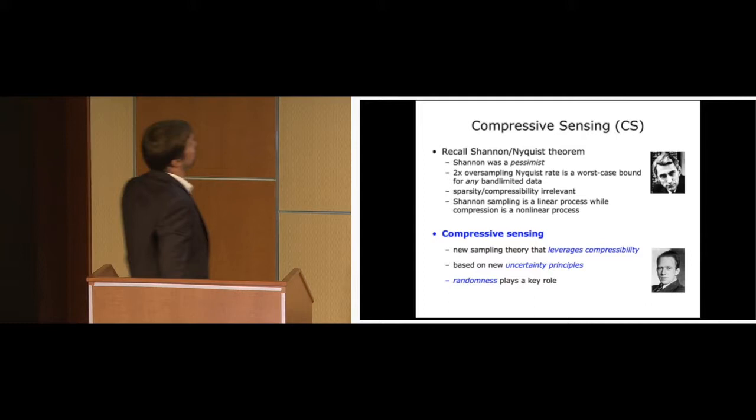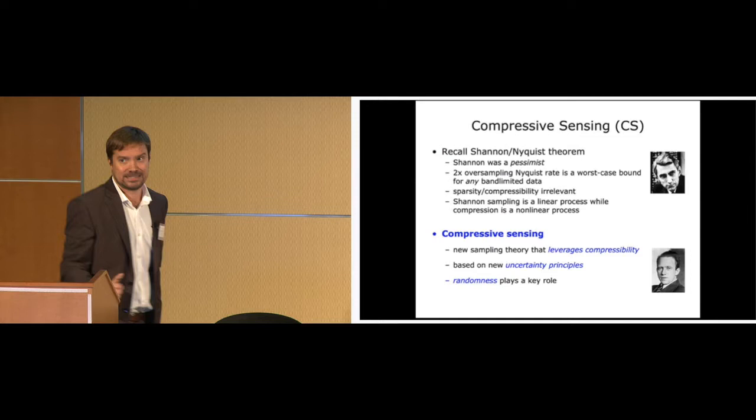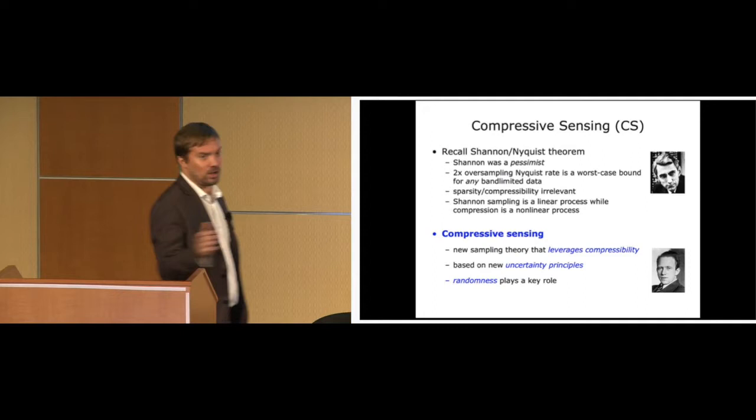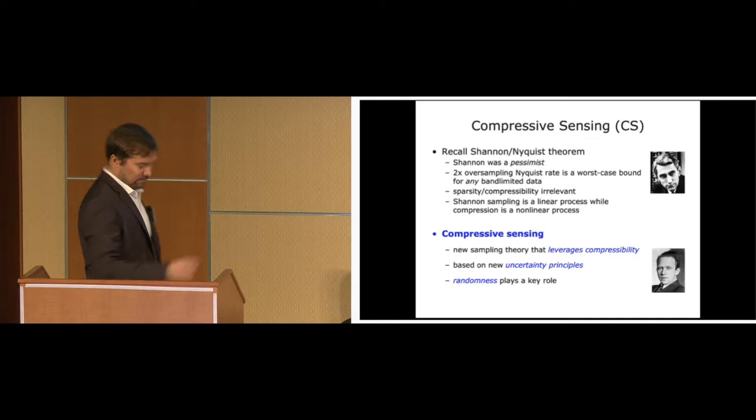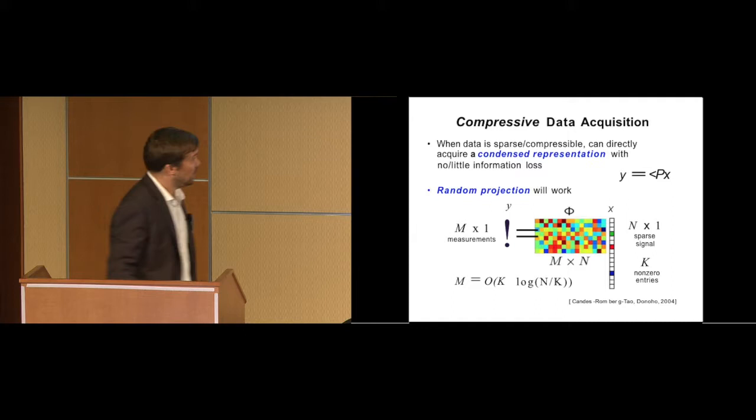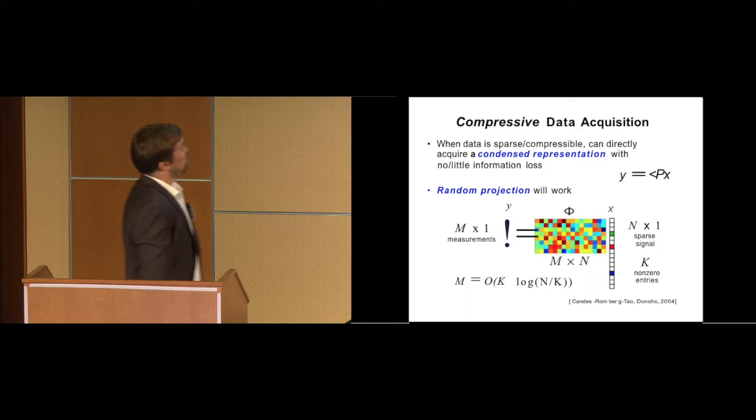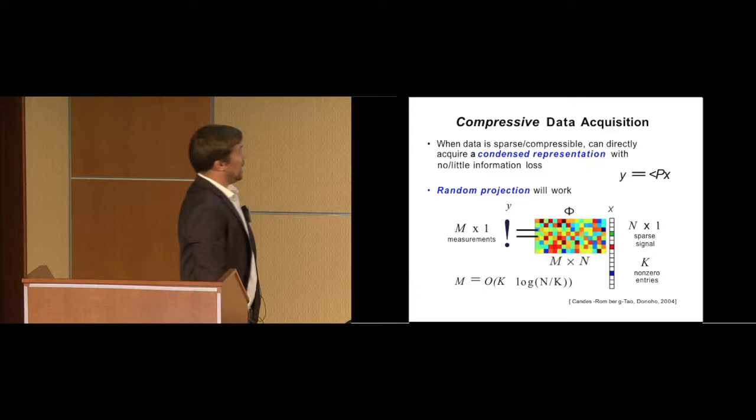And so this is compressive sensing. Shannon Nyquist's theorem says you find the highest frequency signal and you'll double that and then you'll be sure not to miss anything. Well, this is a worst case scenario. Real signals that we might encounter in the lab or the natural world aren't really this bad. And a lot of signals, especially what we encounter in neuroscience, they're sparse. That most of the signal will be zero or it's sparse in some domain. And so this leverages some new uncertainty principles and randomness plays a really key role. So imagine if we have a sparse vector there, x. Most of that vector is zeros, but we don't know where the non-zeros are. We have no idea. They could be anywhere.